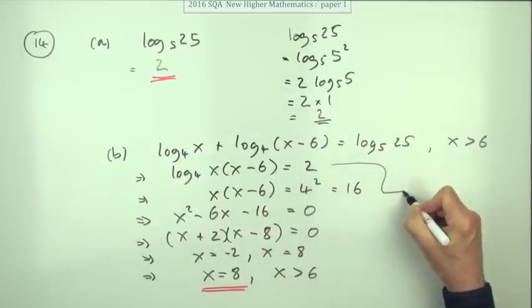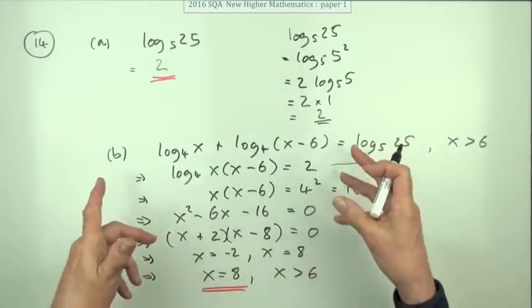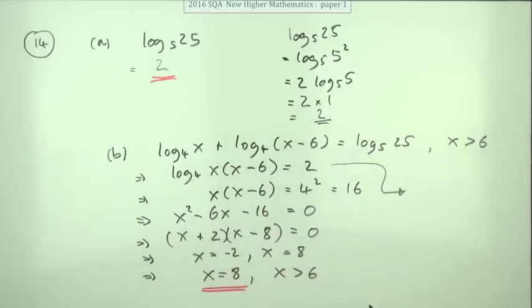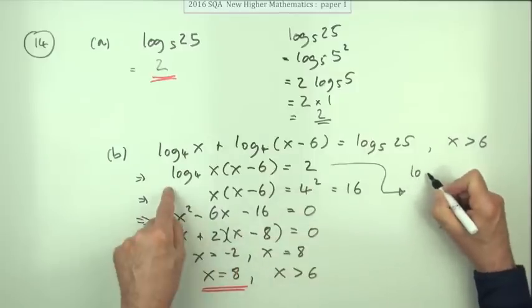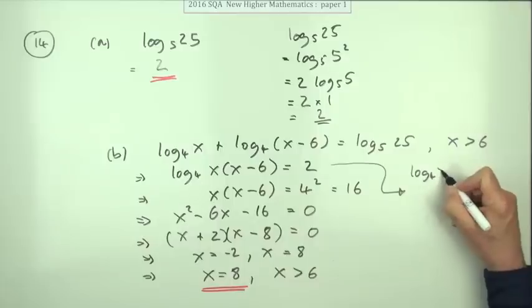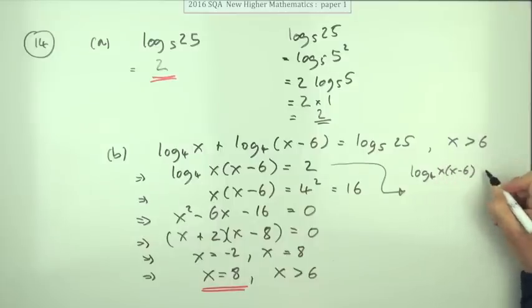Now the only way that you might wish to do something differently would be to do the logarithmic palaver dance, as I would call it, and create a log on this side and say here I've got log base 4 of x times x minus 6, but I don't have a log on this side.